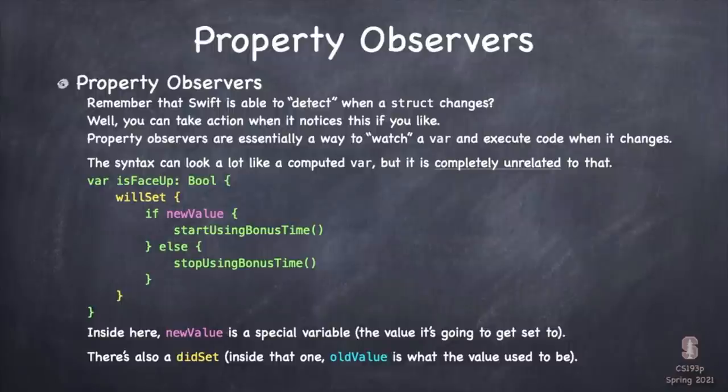In this example, every time isFaceUp changes we start and stop the bonus time pie-shaped animation that shows how long the card has been face up. There's also a didSet that tells you right after a struct has changed — in that one the special var is oldValue. Property observers are very powerful — completely different from computed vars. We'll find uses for this in demos throughout the rest of the quarter.